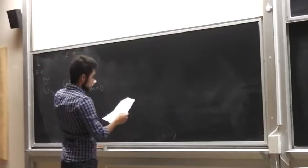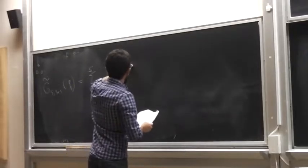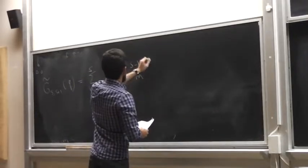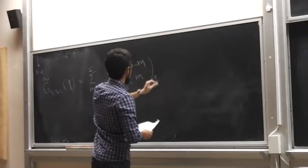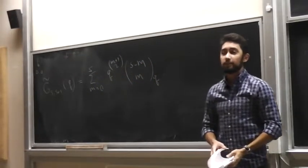So we sum m equals 0 to s, q to the m plus one choose two, s minus m choose m sub q. And so that's our generating function.